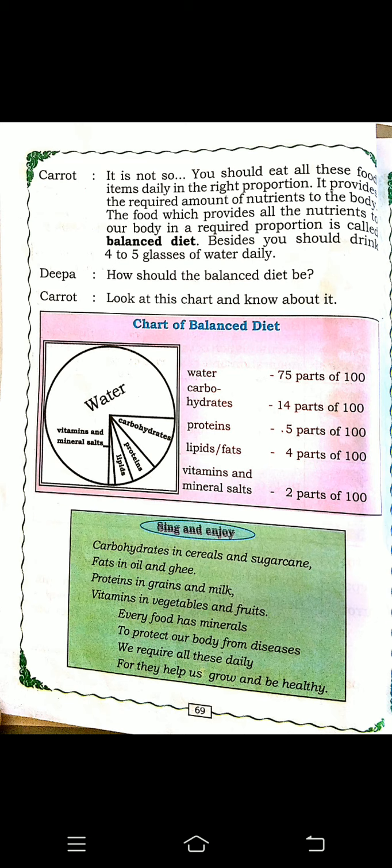The nutrient song: Carbohydrates are found in cereals and sugarcane. Fats are found in oil and ghee. Proteins are found in grains and milk. Vitamins are found in vegetables and fruits. Every food has minerals to protect our body from diseases. We require all of these daily because they help us grow and be healthy.